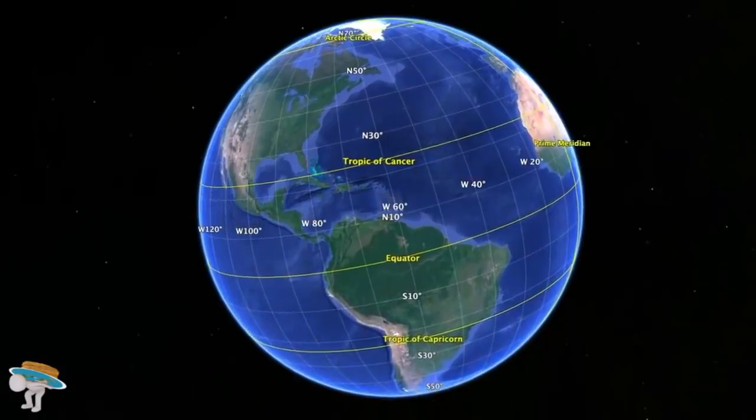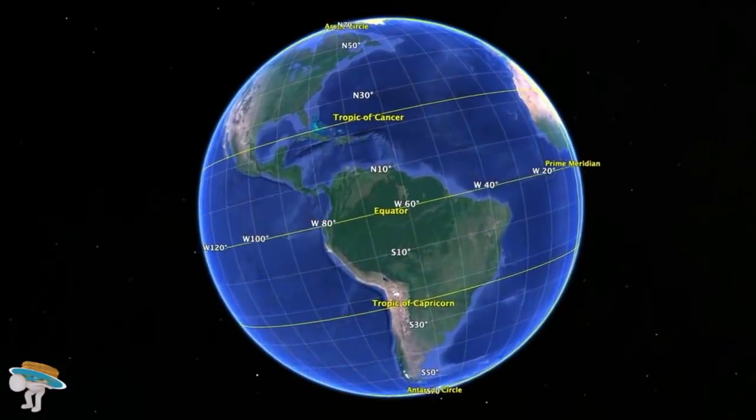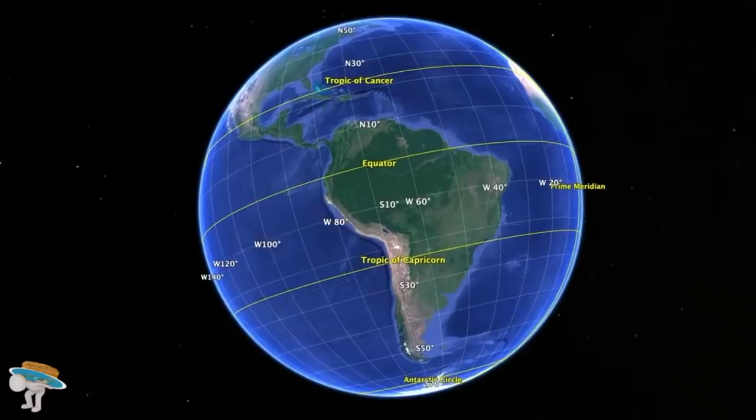At the equator, they are the farthest apart, before narrowing down again and converging at the opposite pole.